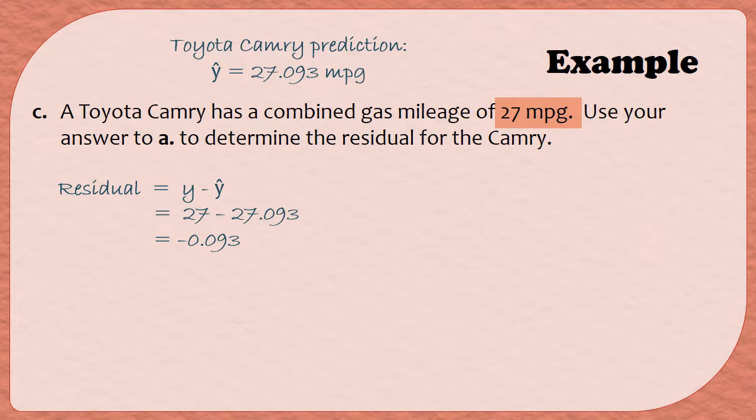When we report our answer, make sure we label it, so because the y values are gas mileage in miles per gallon, I'm going to label my answer as negative 0.093 miles per gallon. Now that might seem a little strange to have a negative mileage. The reason we're getting a negative here is because our prediction was a little bit of an overestimate. We were 0.093 miles per gallon too high in our prediction, so that's why we end up with a negative.